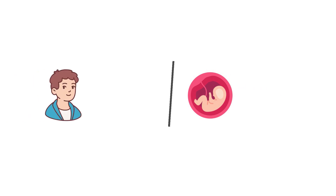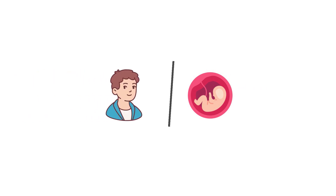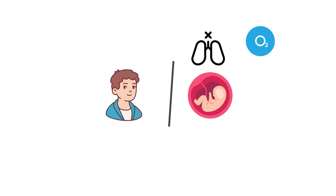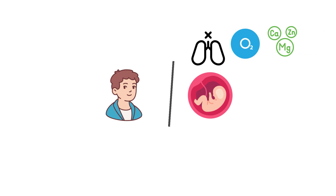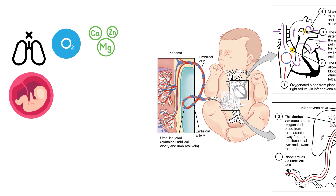The process of fetal circulation is different than that of an adult because the fetus is not yet capable of breathing air and obtaining oxygen through the lungs. Instead, oxygen and nutrients are supplied to the fetus by the placenta via the umbilical cord.